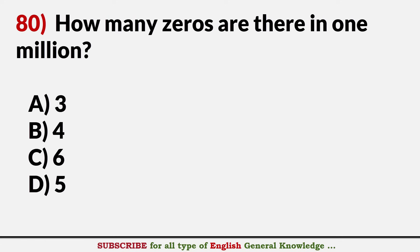How many zeros are there in one million? Answer C. Six.